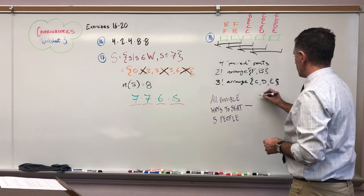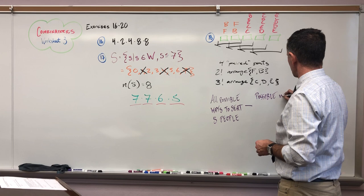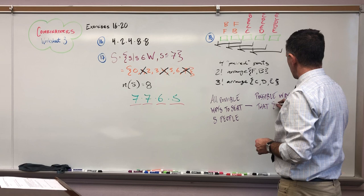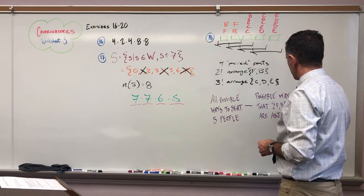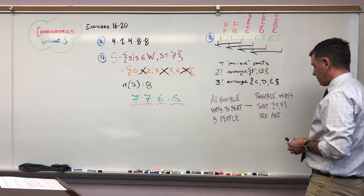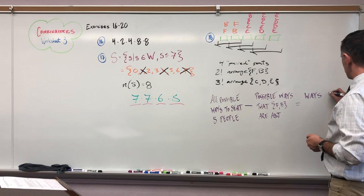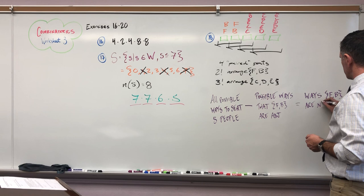So our strategy here is to take all possible ways to seat five people, minus the possible ways that F and B are adjacent to each other. Remember that can be in two different arrangements in that way: F-B or B-F.